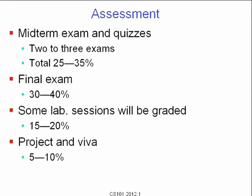We'll have one midterm and maybe a few quizzes — they're indistinguishable from each other. There'll be about two to three quizzes in all, amounting to 25 to 35 percent of total credit. The final exam will be between 30 and 40 percent. Some lab sessions or exercises will be graded, amounting to about 15 to 20 percent. If we do a project with a Viva, it'll be worth about 5 to 10 percent.